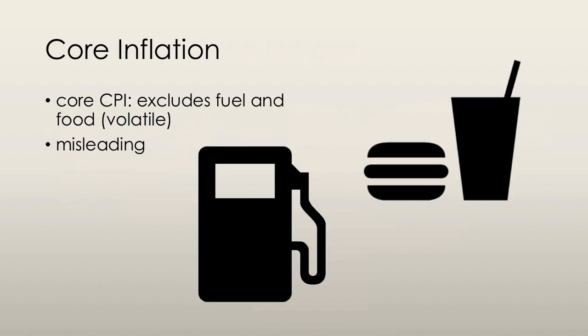We also have something known as the core rate of inflation. The core rate of inflation is simply the inflation rate that excludes volatile elements. In core CPI, this excludes food and fuel because these are extremely volatile — their prices change all the time. The problem is that while it removes volatile elements, it gives a misleading view of the true inflation rate because food and fuel are very crucial parts of every household's expenditure, and removing them hides how much households are actually spending due to rising prices.